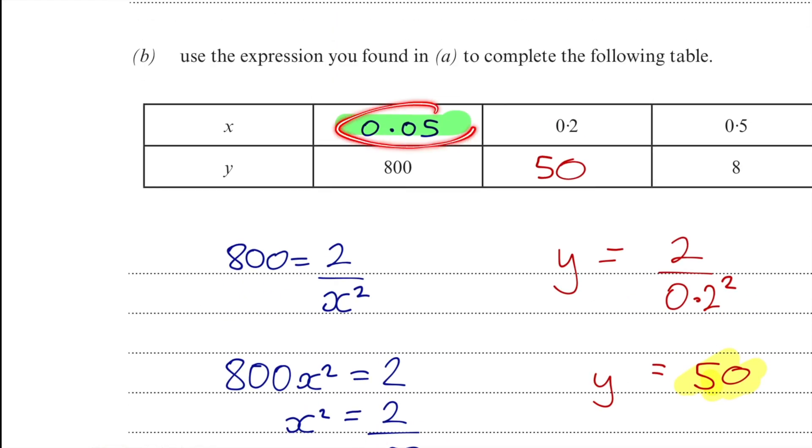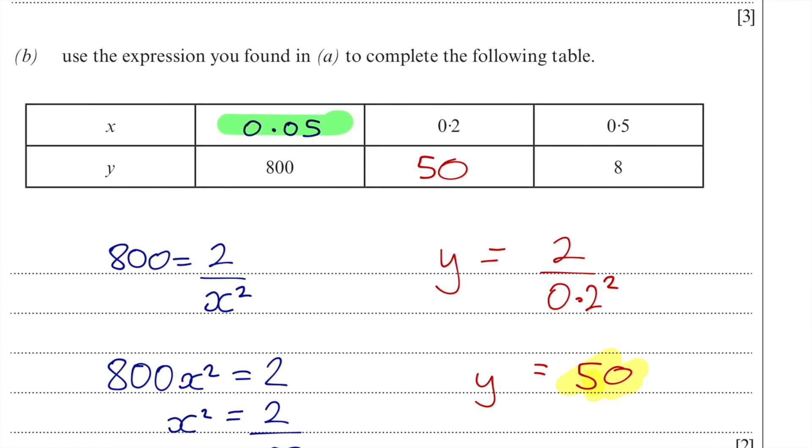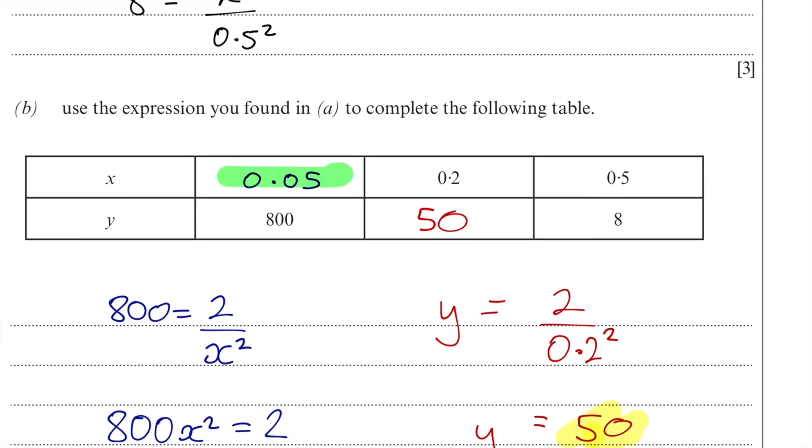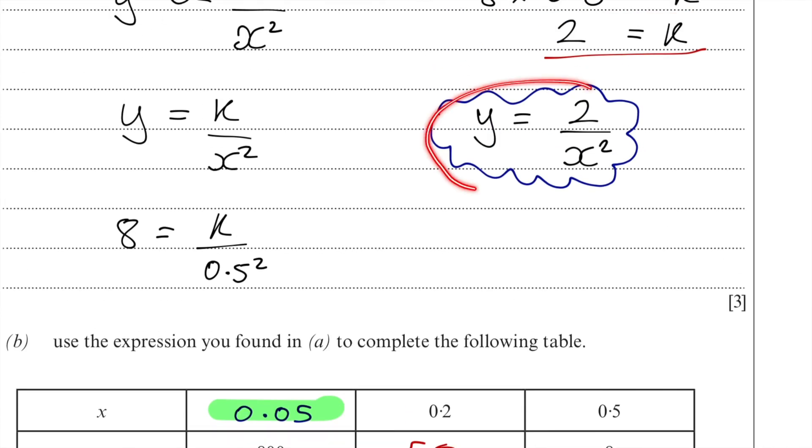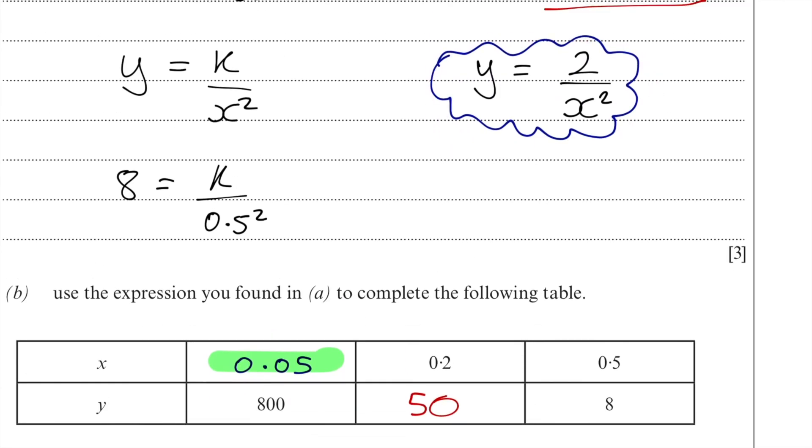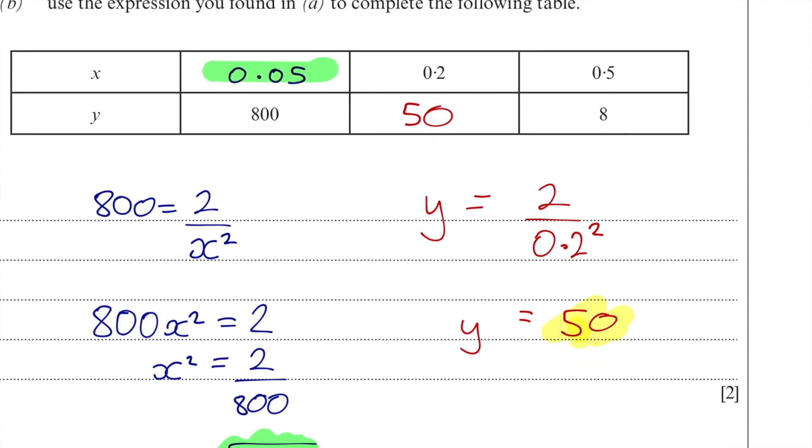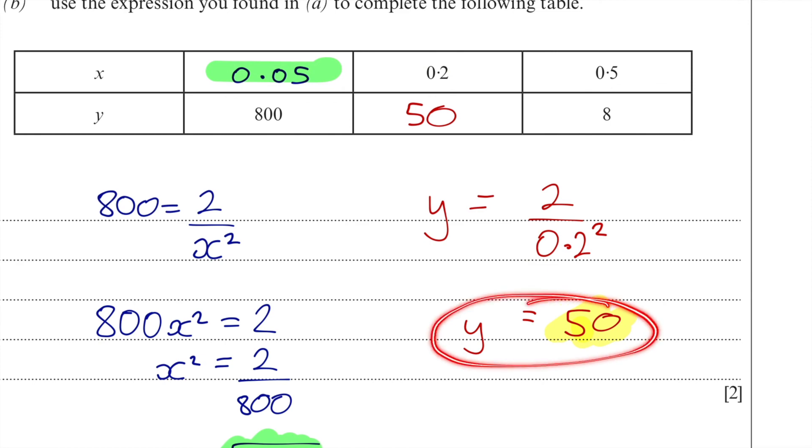The next value, we're told that x is 0.2 and to find the value of y. As we can see, it's 50, but how did I get there? I got there by looking at this statement here that I made from part a, that y equals 2 over x squared, and I substituted the value for x to be 0.2. 0.2 squared, 2 divided by that, gave me an answer of 50.